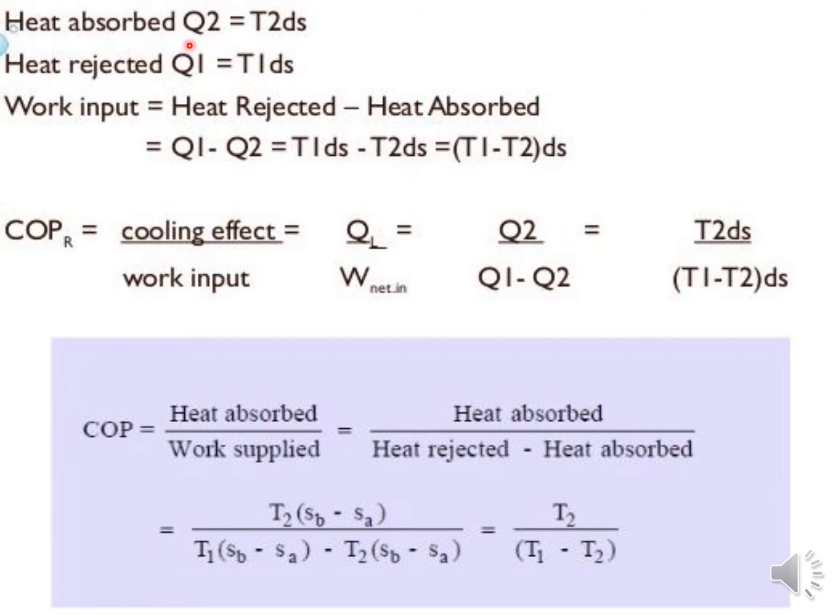Heat absorbed is Q2 = T2 DS. Heat rejected is Q1 = T1 DS. Work input or Wnet is heat rejected minus heat absorbed, Q1 minus Q2. But in the engine, it is heat absorbed or supplied minus rejected, just opposite. If you reverse the heat engine, it is refrigerator and heat pump. Now we have reversed, heat rejected minus heat absorbed.